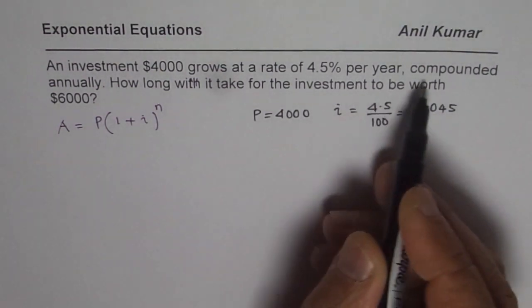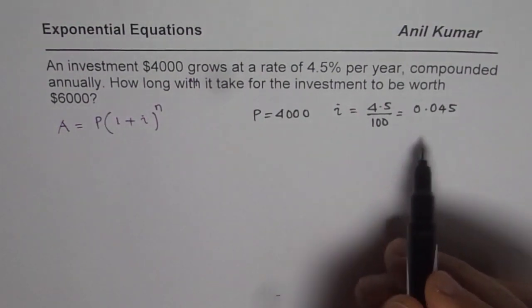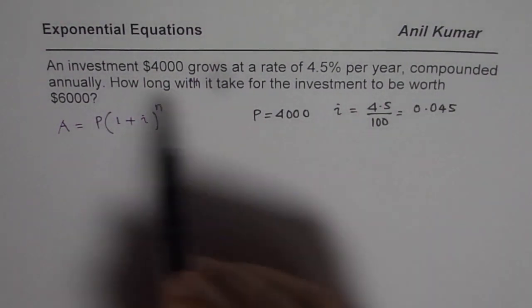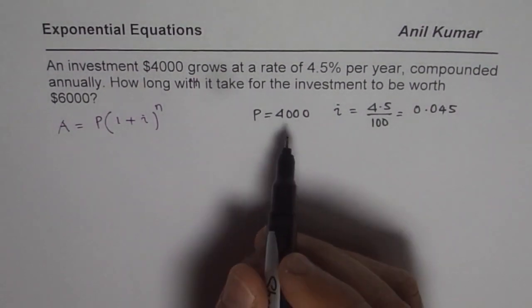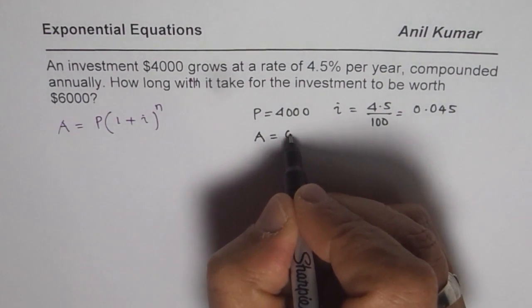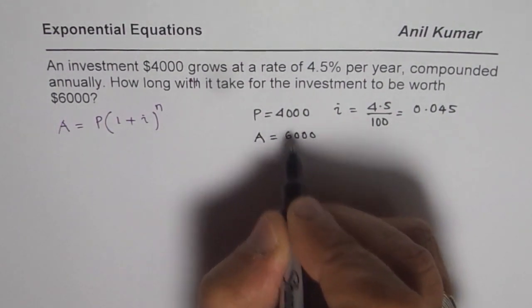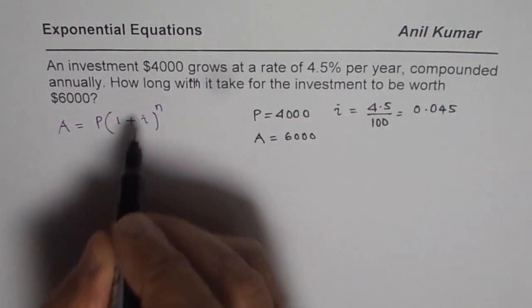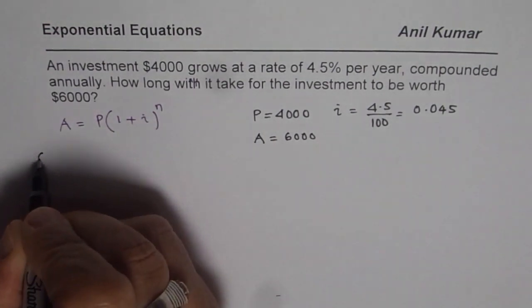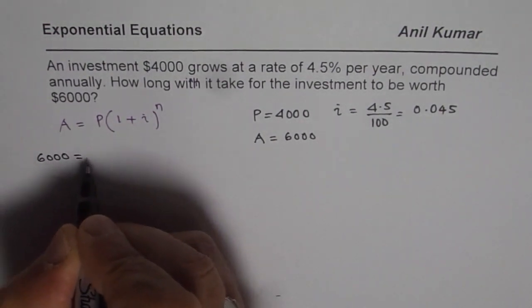This is compounded annually. We'll take up in the next video what happens when the compounding period changes. Now we need to find when the amount A will equal $6000. Let's substitute these values and then find n which is not known to us.